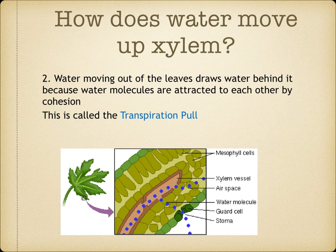Transpiration is the evaporation of water from the leaves and the loss of water vapor to the atmosphere. Water vapor can diffuse out of the leaf when the stomata open. Water is pulled up the xylem in the stem from the roots to the leaves by the transpiration pull. The water is then used in photosynthesis and also to stop the plant from wilting.